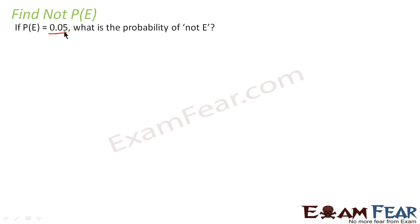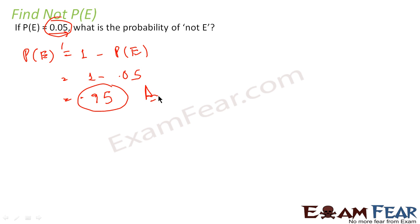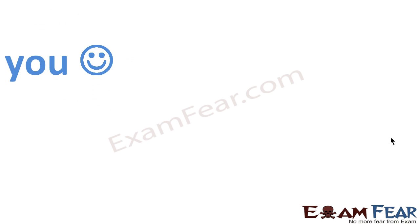Here is a simple question: the probability of event E is given as P(E) = 0.05 and we need to find P(not E). We know that P(not E) equals one minus P(E). Just putting in the value: one minus 0.05 equals 0.95. So P(not E) is 0.95. Very simple — just apply the formula.